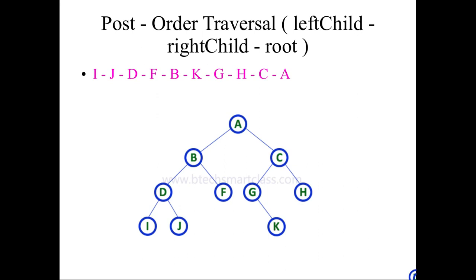I is the leftmost node, so we have to visit the left child node first. We are visiting the I node. Once you visit the I node, then you have to visit the right child. The right child of the D node is J. So once you visit the I node, then you have to visit J. Then you have to visit the root node D.